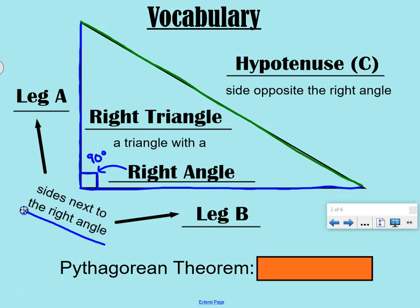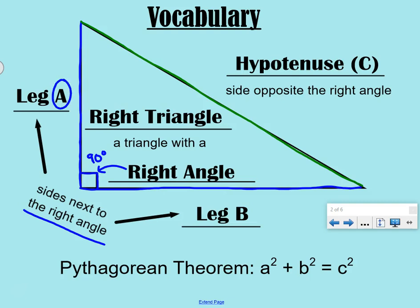The Pythagorean Theorem is A squared plus B squared equals C squared. So leg A and leg B — A squared plus B squared equals C squared, your hypotenuse squared. That's the Pythagorean Theorem, and that's what we're going to be working with today.